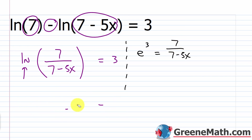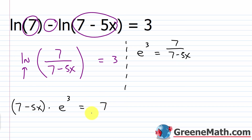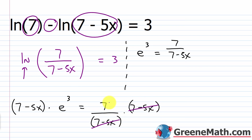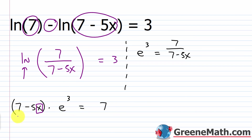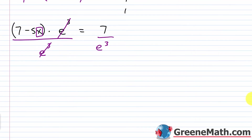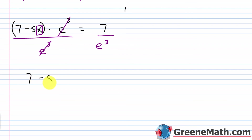Now, to get x by itself, I multiply both sides of the equation by (7 minus 5x). So (7 minus 5x) times e cubed equals 7, since the (7 minus 5x) terms cancel on the right. Then I divide both sides by e cubed to get that out of the way. So I have 7 minus 5x on the left is equal to 7 over e cubed on the right.